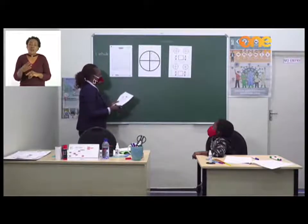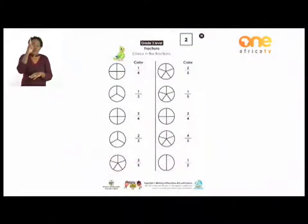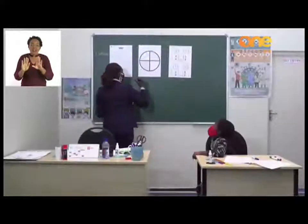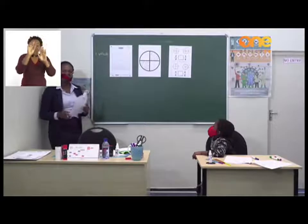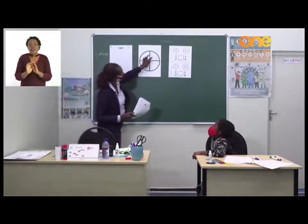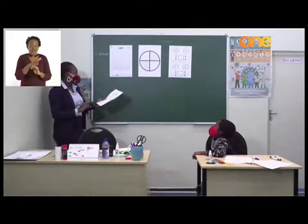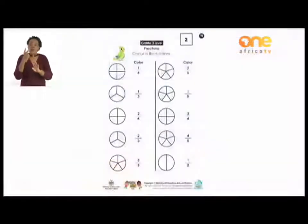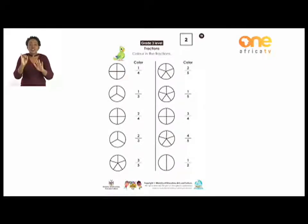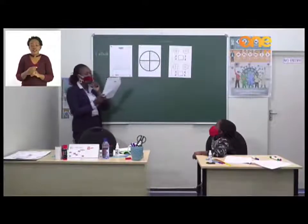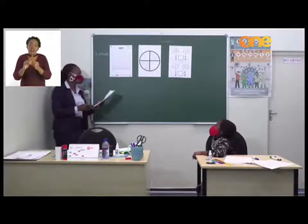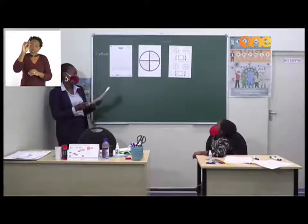Let me do another example. Two over four means we color two pieces of pizza out of one, two, three, four pieces. I want you to do the rest. You draw a circle, you show me the number of parts. If they are two out of five, it means there must be five parts, then you color the number on top — two out of five.